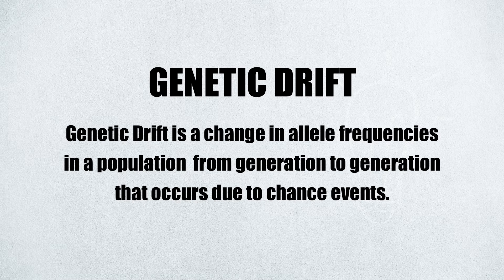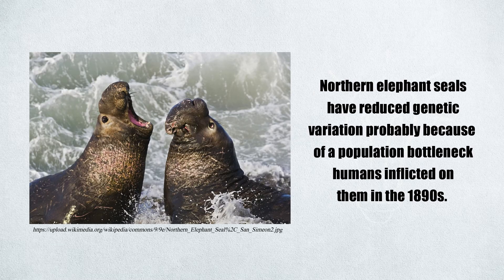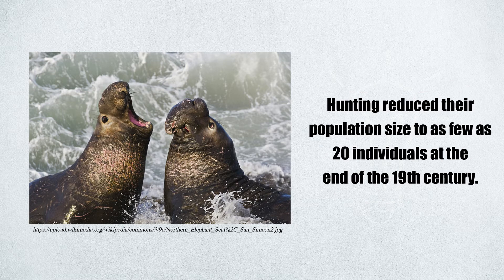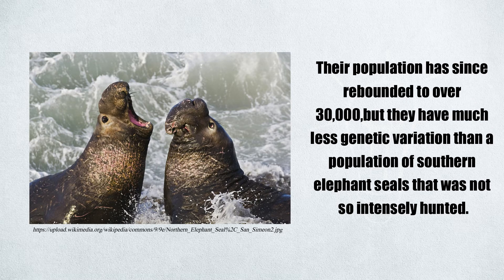Genetic drift is a change in allele frequencies in a population from generation to generation that occurs due to chance events. An example is the northern elephant seal, which has reduced genetic variation, probably because of a population bottleneck humans inflicted on them in the 1890s. Hunting reduced their population to as few as 20 individuals at the end of the 19th century. Their population has since rebounded to over 30,000, but they still have much less genetic variation than a population of southern elephant seals that was not so intensely hunted.